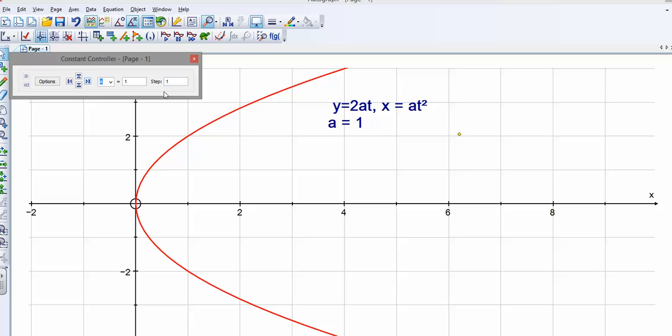So I'll change the step size to 1. I'm going to go up. I'm going to make a 2. So what's going to happen to the parabola?